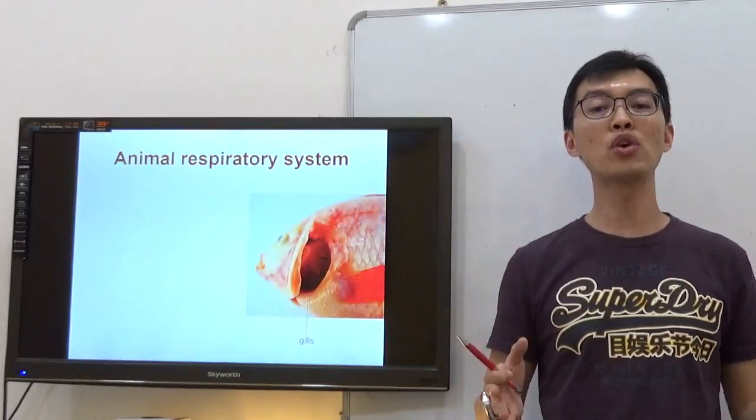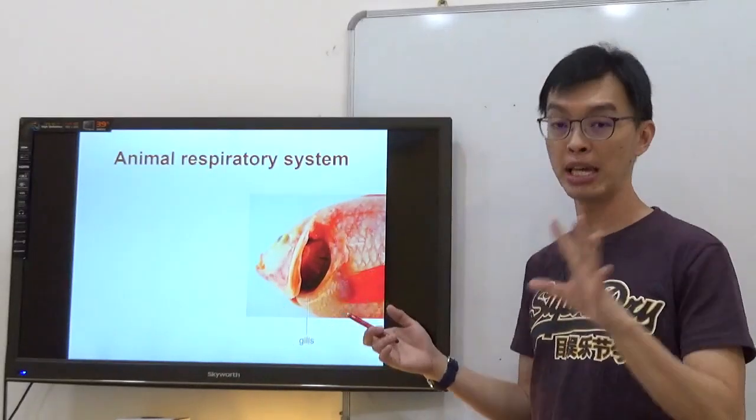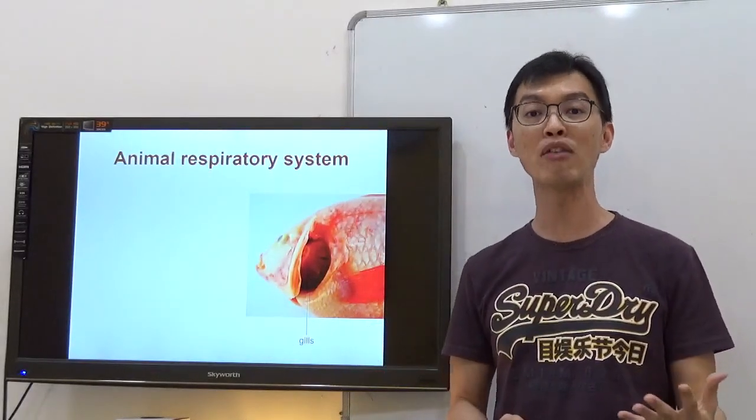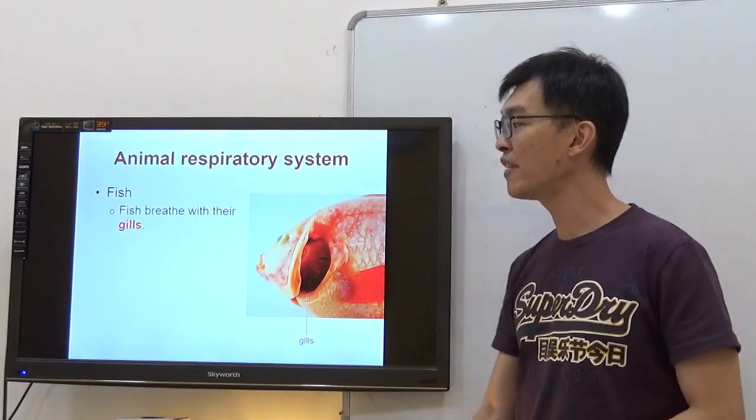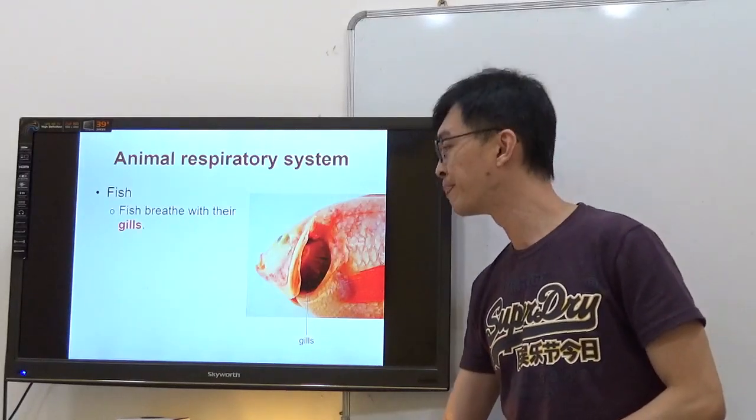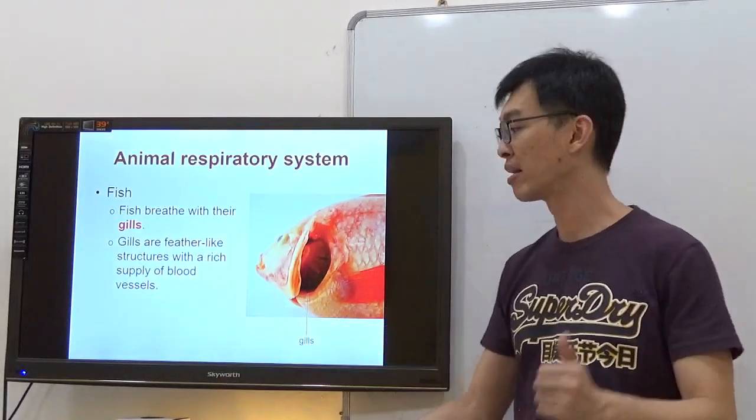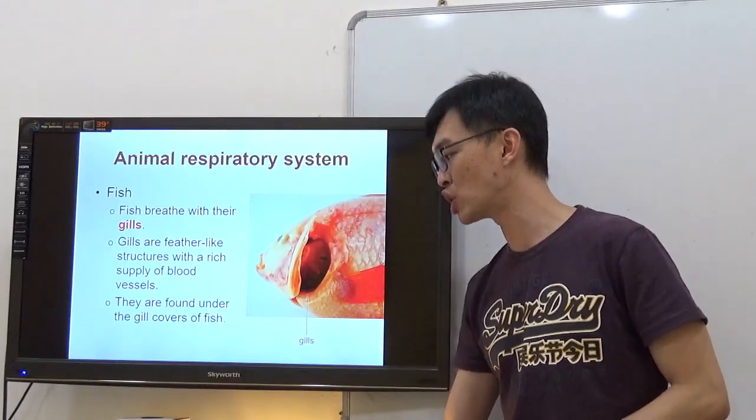Once we know about humans, let's move on to talk about fish. Sometimes they have questions about fishes. Fish breathe with their gills. Gills are feather-like structures with a rich supply of blood vessels. They are found under the gill covers of fish.